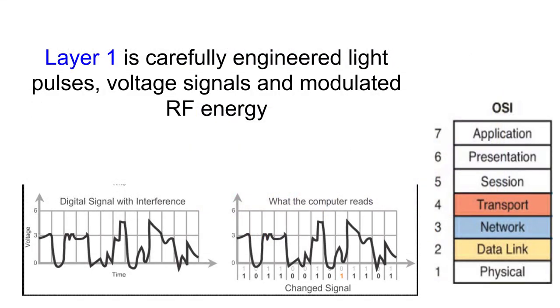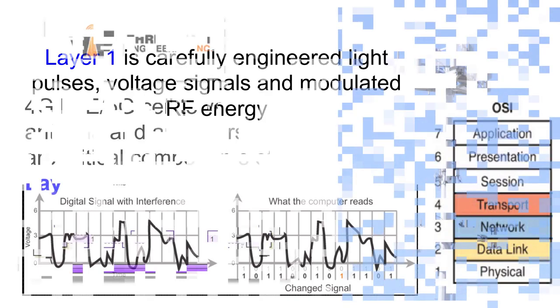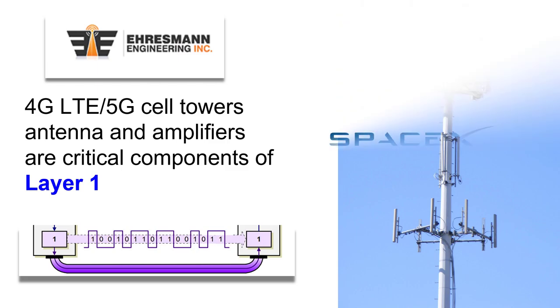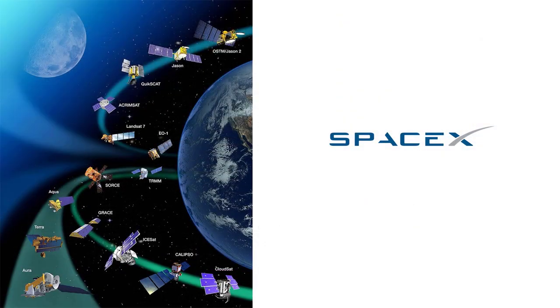Layer 1 is carefully engineered light pulses, voltage signals, or modulated RF energy. 4G LTE and 5G antenna and power amplifiers are critical layer 1 for every mobile phone user. SpaceX and others are taking layer 1 to outer orbit.